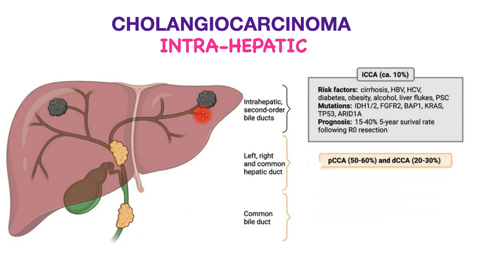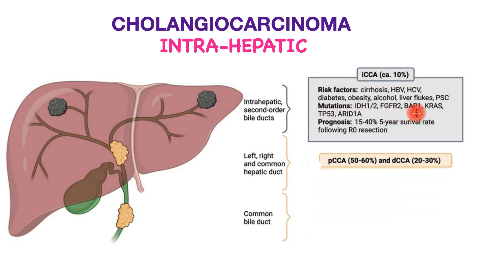The risk factors for intrahepatic or liver-related bile duct cancers are previous cirrhosis, viral infections, diabetes, obesity, alcohol, presence of liver flukes, and primary sclerosing cholangitis — a condition in which strictures form in the bile tubes both within and outside of the liver. It is also associated with certain mutations, which are disruptions or alterations in the DNA of the patient.